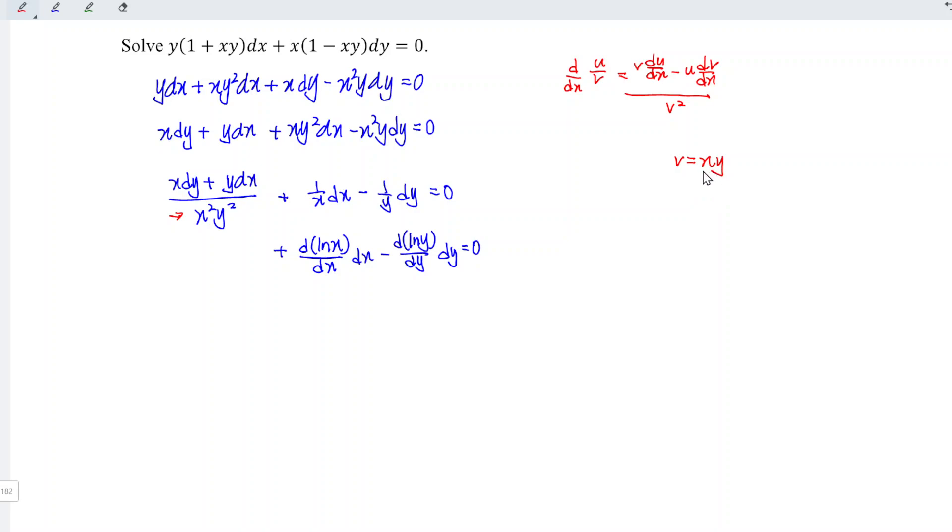Unfortunately v is a product of two variables, so let's apply product rule and determine the derivative. When we differentiate v with respect to x, we should obtain x times dy/dx plus y times 1. If we times the entire equation by dx, we should obtain dv is equal to x dy plus y dx, which is the numerator here.